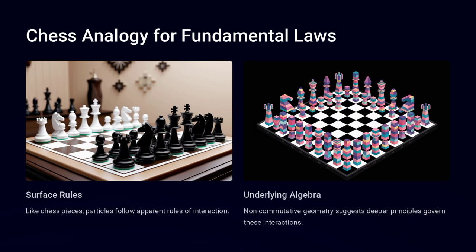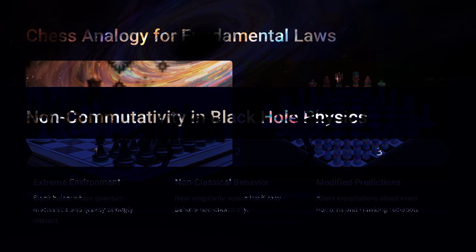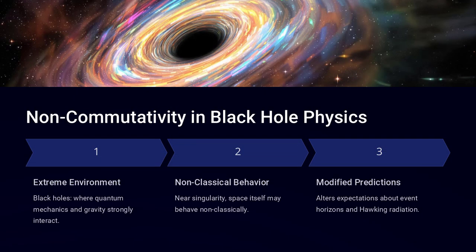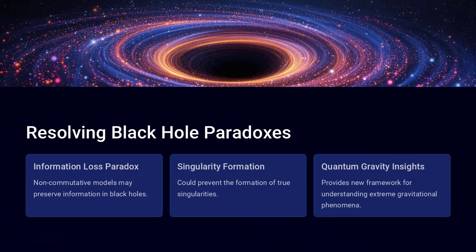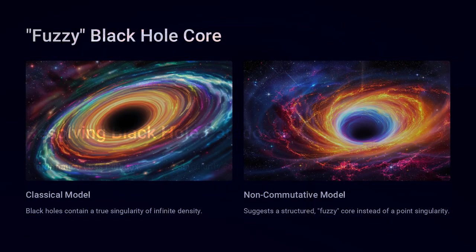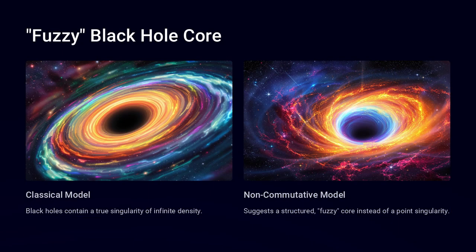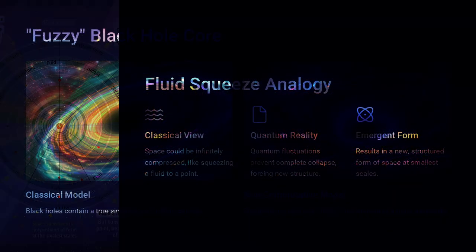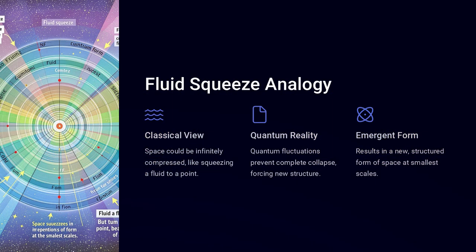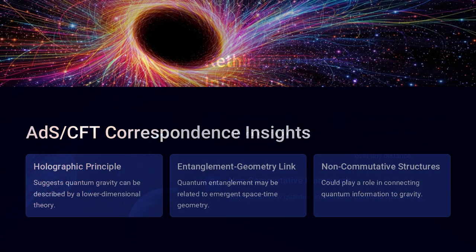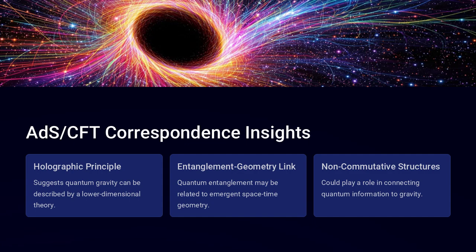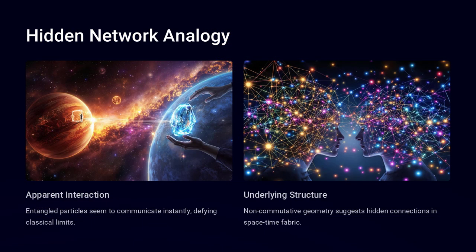At extremely small distances near the Planck scale — around 10^-35 meters — some theories suggest that space may not be a smooth background at all, but rather a fuzzy, quantized structure where positions are inherently uncertain. This idea appears in advanced physics models like string theory and quantum gravity, where space-time ceases to be a simple stage for events and instead becomes an active participant in quantum processes.